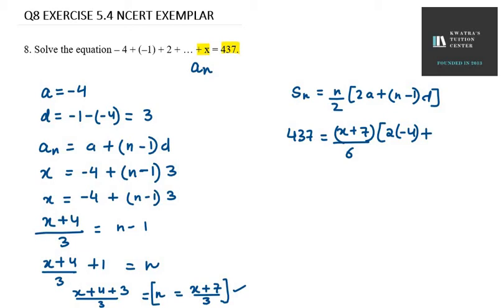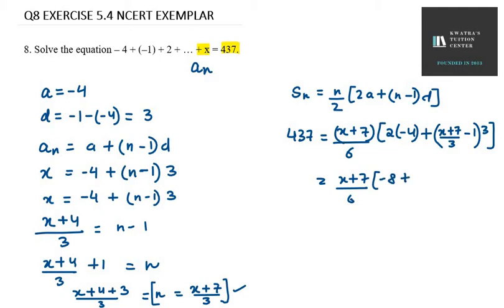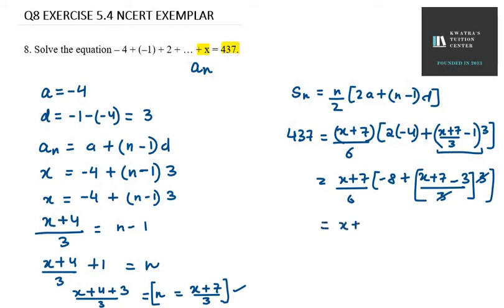So we get (x plus 7) over 6, in bracket: minus 8 plus — taking LCM of 3 — (x plus 7 minus 3) over 3, bracket close, into 3. The 3 in the denominator and the multiplied 3 cancel out, leaving inside the bracket: minus 8 plus (x plus 7 minus 3).